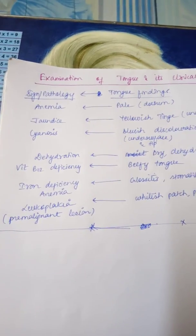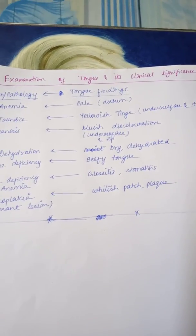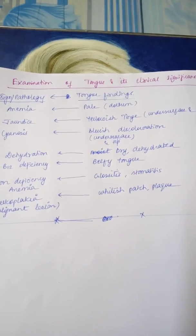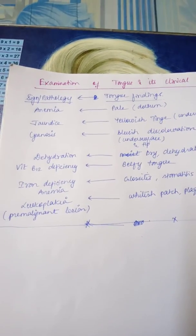If there is a bluish discoloration on the undersurface and on the tip, then we can say there is cyanosis.